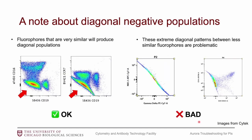There is one pattern that may not be familiar but is somewhat expected in spectral data. If your negative population has a diagonal pattern, this indicates that the fluorophores on the two axes are very similar to each other — for example, Super Bright 436 versus BV421 or Super Bright 436 versus eF450. These fluorophores are extremely similar; you cannot separate them on a conventional cytometer. So this diagonal pattern is actually expected. However, if you see this diagonal on fluorophores that are not similar — such as PE-Cy7 versus APC-Cy7 or BV421 versus BV786 — there's something going on that we need to dig into further.